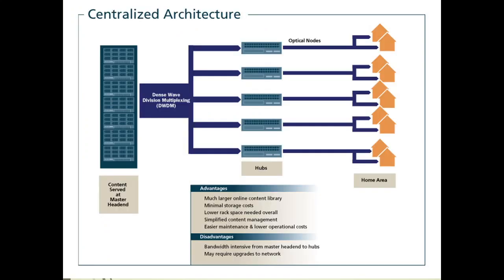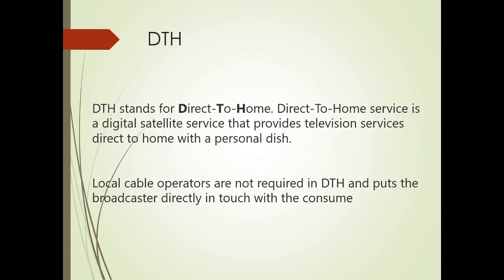In the architecture diagram, the content server is at the master head end, connected via dense wave division multiplexing to hubs, which are then connected to the home area or end users through optical nodes. The advantages include a larger online content library, minimal storage cost, and lower rack space since content is centralized. The disadvantage is that it is bandwidth-intensive from the master head end to the hub and may require network upgrades.